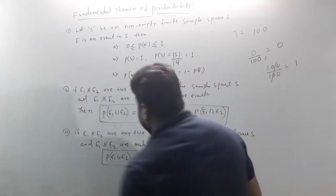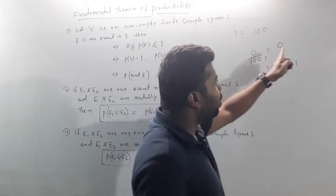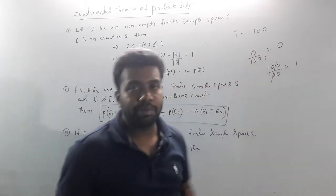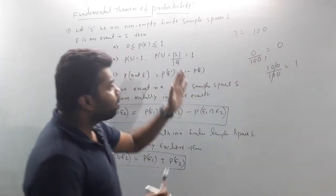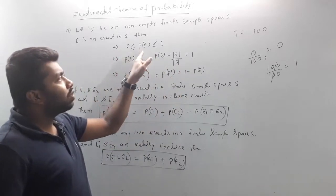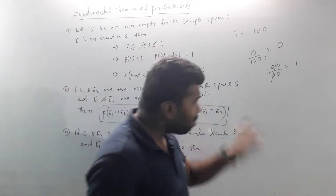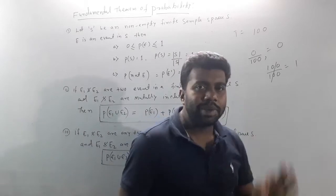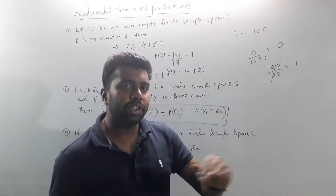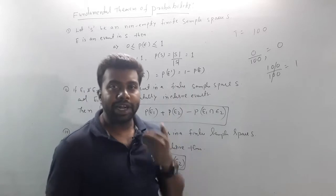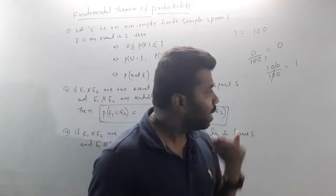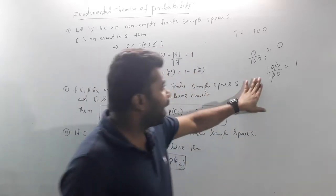So applying the same logic, the answer lies between 0 and 1. That means P of E is greater than or equal to 0 and less than or equal to 1. The probability answer always lies between 0 and 1. So the probability answer cannot be negative or more than 1.